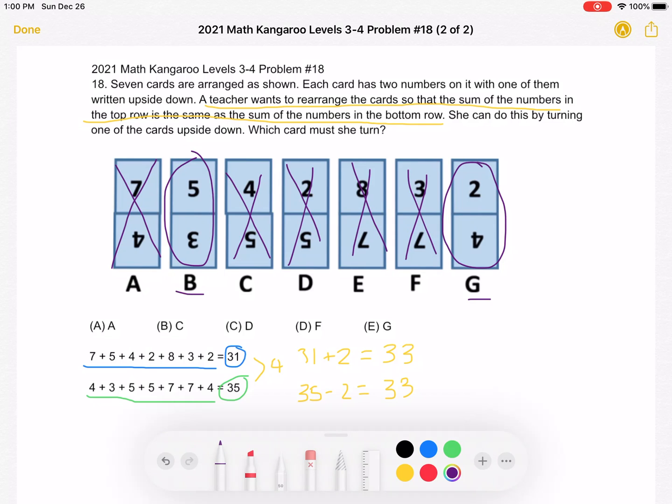So we have B and G are two cards where the two numbers written on them have a difference of 2.